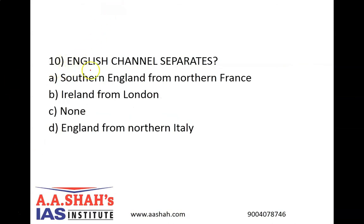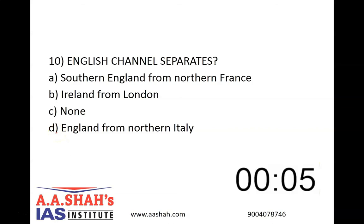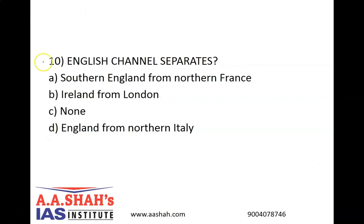Last question, number 10. The English Channel separates: A: Southern England from Northern France. The correct answer is A: Southern England from Northern France. The English Channel is an arm of the Atlantic Ocean that separates Southern England from Northern France, and links to the southern part of the North Sea by the Strait of Dover at its northeastern end. It is the busiest shipping area in the whole world.